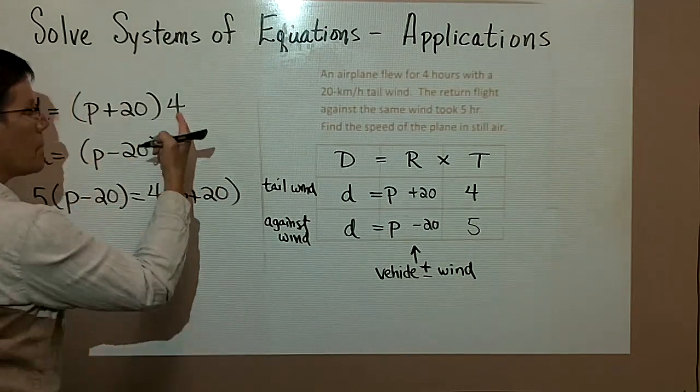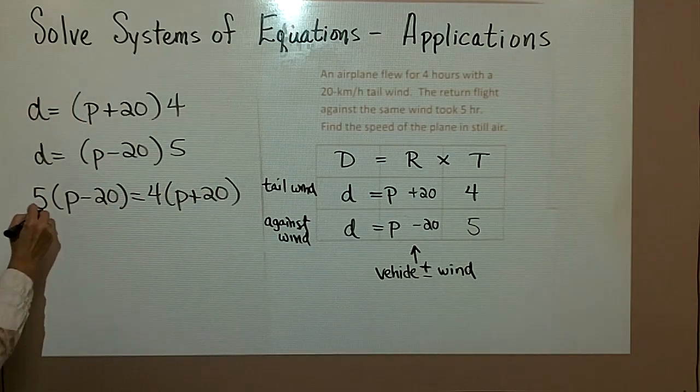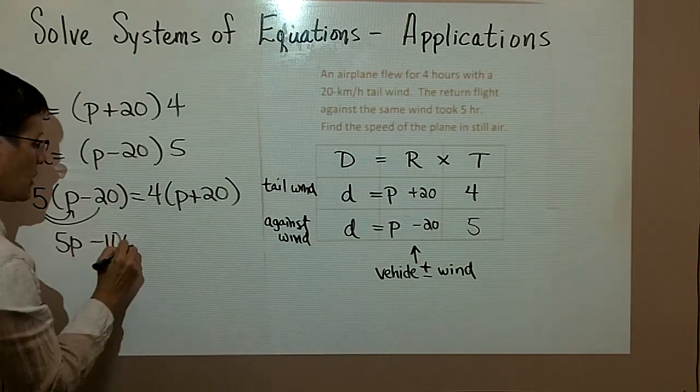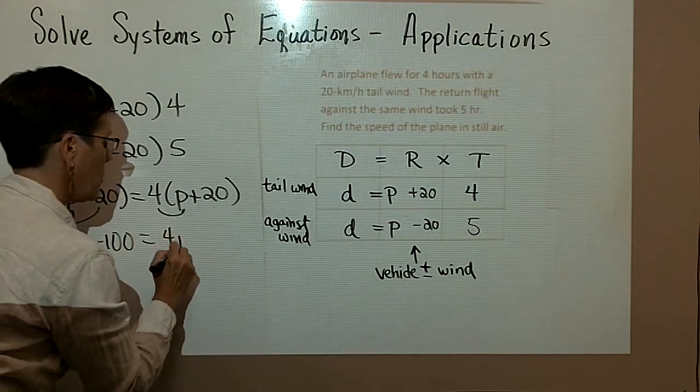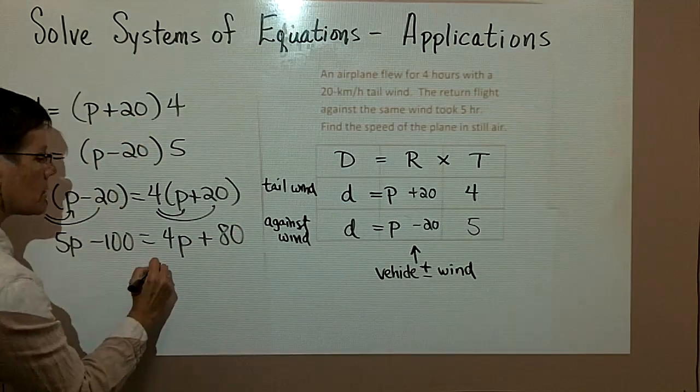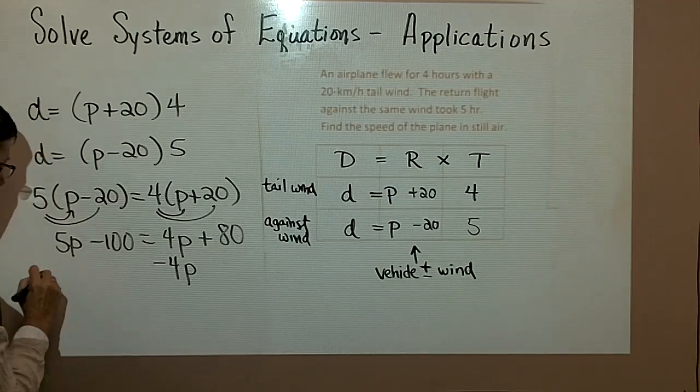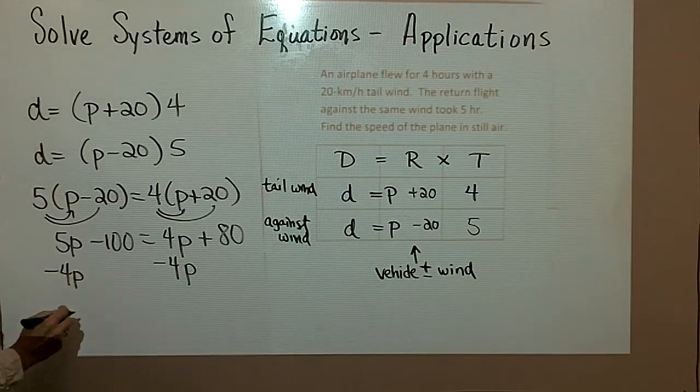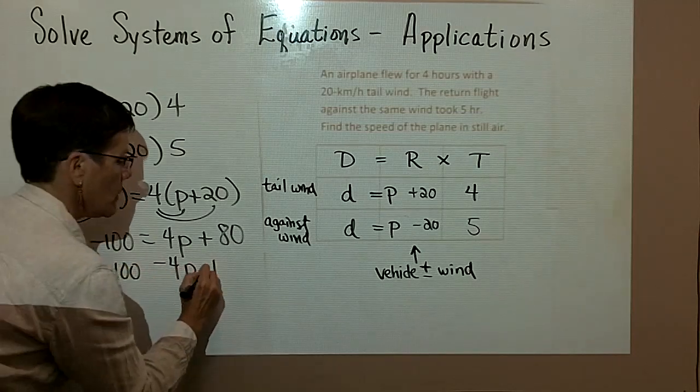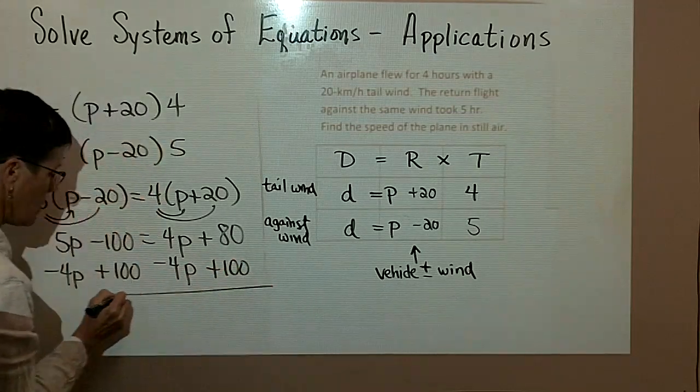I just like to see my binomial out in front. So here I have 5p minus 100. And here I have 4p plus 80. And I'm going to subtract 4p from both sides. And if you don't mind, because I'm going to run out of space, I'm going to add 100 to both sides at the same time as well.